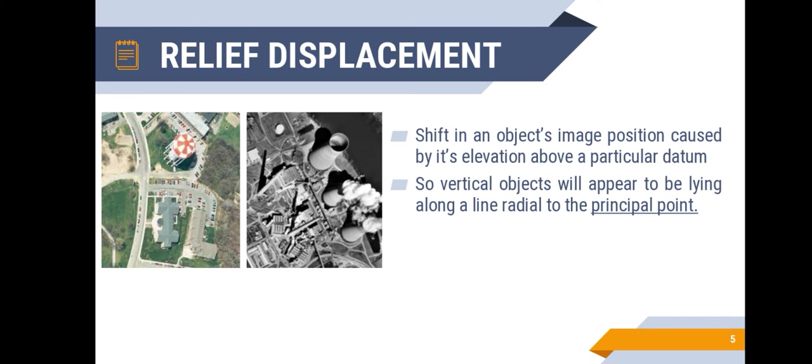Let's move on to the first topic, relief displacement. The surface of the earth is not smooth and flat. As a consequence, there is a natural phenomenon that disrupts the true orthogonality of photo image features. That phenomenon is called relief displacement. It is the shift in an object's image position caused by its elevation above a particular datum. A vertical object, such as a building or a tree, will appear to be lying along a line radial to the image nadir point. This deformation is called relief displacement.